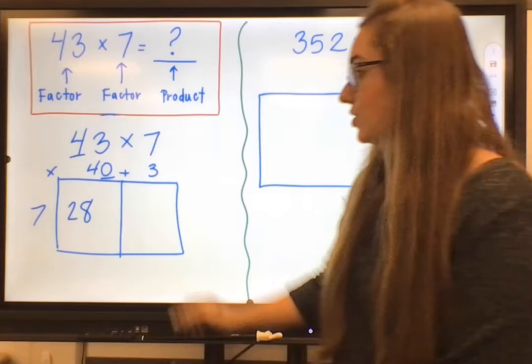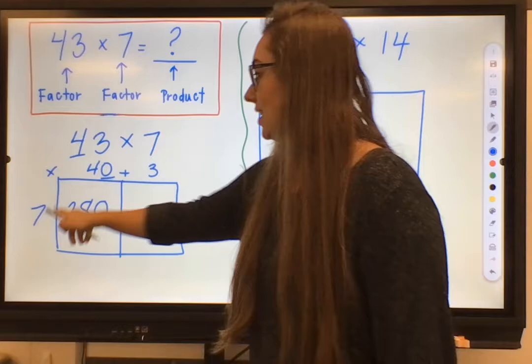So what I mean by that is that 7 times 4 is 28. I have 1 zero in that 40, so I just add that to the end, and I know that 40 times 7 is 280.